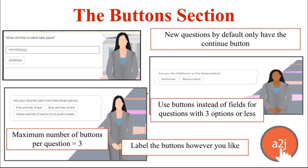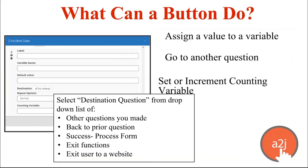You can use buttons instead of fields for questions with three options or less — you can only have three buttons per page, but you can label them however you'd like. For example, for a question like 'Pick your favorite color from these three options,' the buttons could be Pink, Blue, and Yellow. This is a great way to handle yes/no answers or select-one-of-three options instead of using checkboxes, radio buttons, or a text field. A button can assign a value to a variable, branch an end user to another question, or set/increment counting variables for repeat loops which we'll cover in video four.